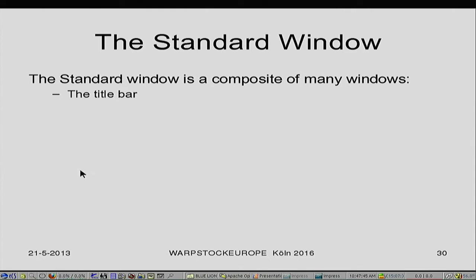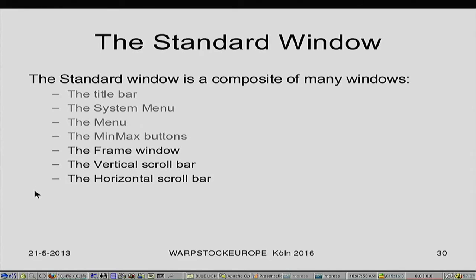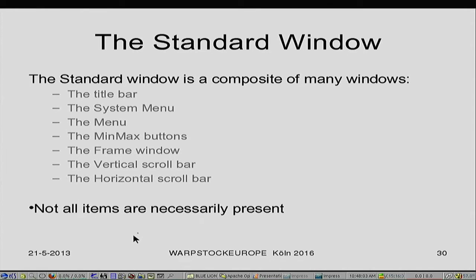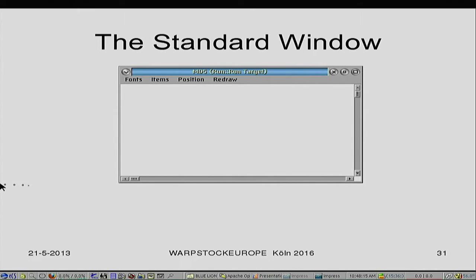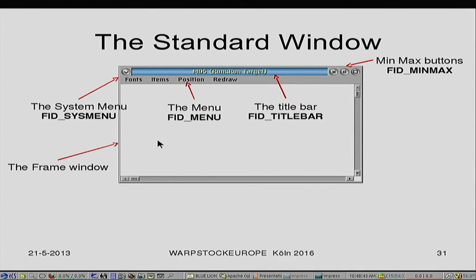The standard window consists of many windows — it's just not one. It consists of the title bar, the system menu, the menu, min and max buttons, frame, vertical scroll bar, and horizontal scroll bar, but not all items have to be displayed. You can see the title bar, the frame, the system menu — often this button is replaced by the icon of the program so you recognize it — and the min/max buttons, which also include the closing button.